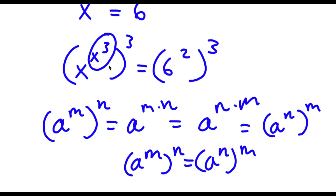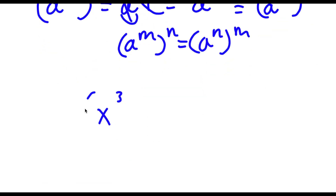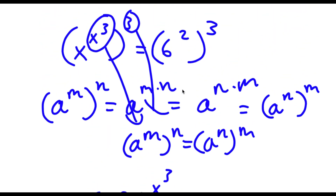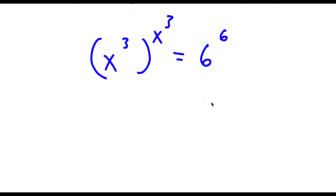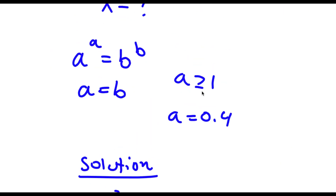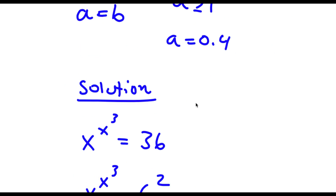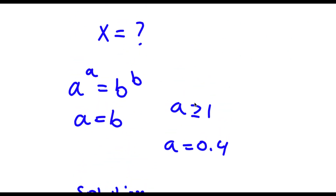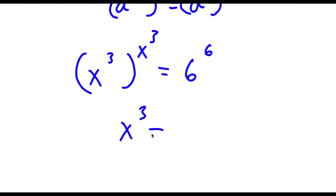So in this case, we can think of x to the power of 3 as m and 3 as n. Switching these, I get x to the power of 3 to the power of x to the power of 3, equal to 6 to the power of 2 to the power of 3, which is 6 to the power of 6. Now, since a to the power of a equals b to the power of b means a equals b — and here a is 6, which is greater than or equal to 1 — this property applies. So x to the power of 3 is equal to 6.